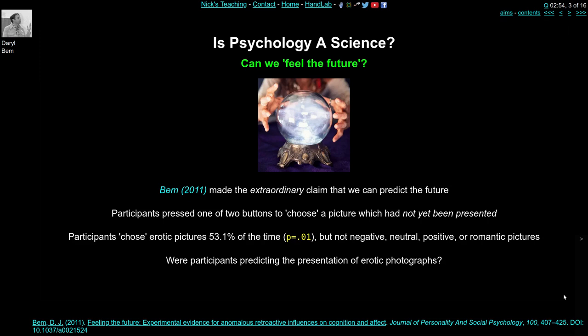This is problematic because the laws of physics and everything we know about the brain, psychology, and science in general says this shouldn't be possible. There have been many attempts to show that people have powers of predicting the future, and every single experiment has failed. Because it's an extraordinary claim, people made the reasonable suggestion that you should have extraordinarily good evidence if you're trying to show that human participants can predict the future.